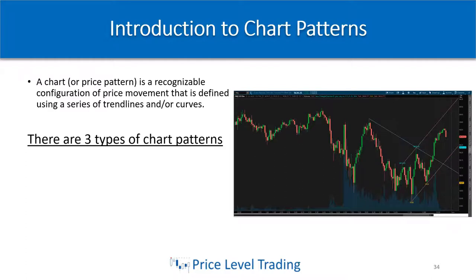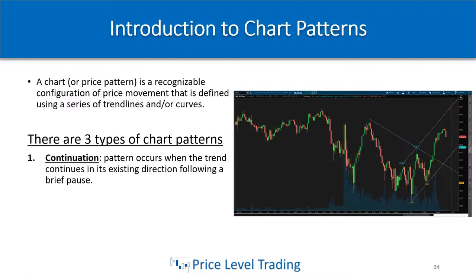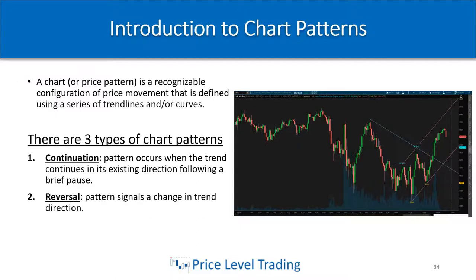There are three types of chart patterns. The first is continuation — this pattern occurs when the trend continues in its existing direction following a brief pause. The second is reversal — this pattern signals a change in trend direction. Finally, the third is neutral — this pattern signals no trend, otherwise known as chop city.